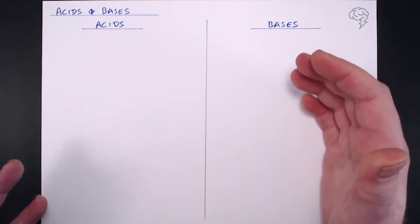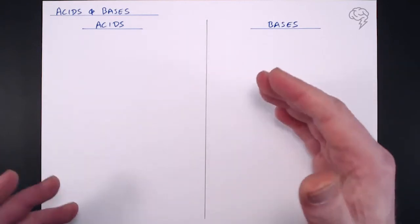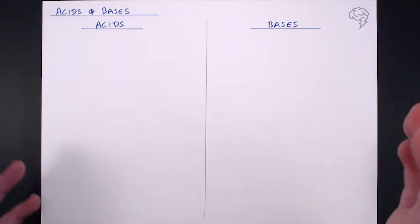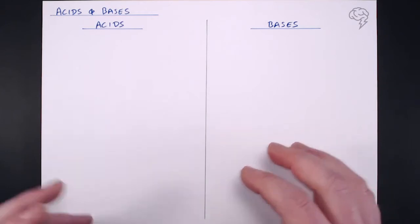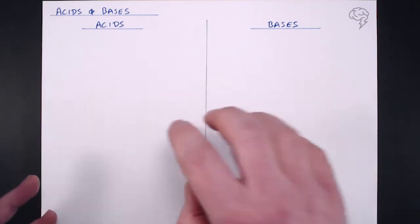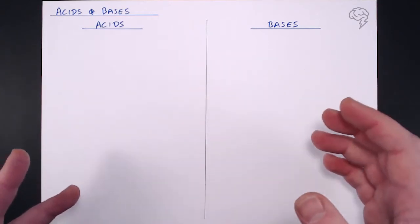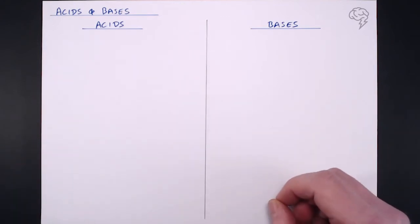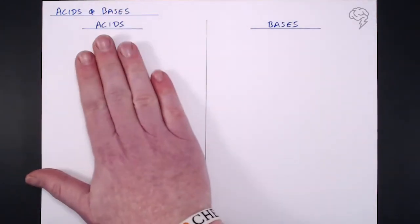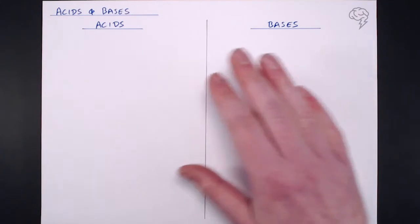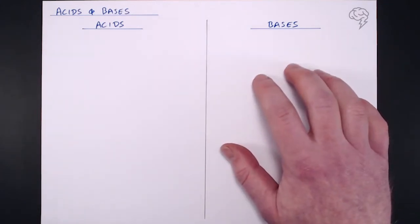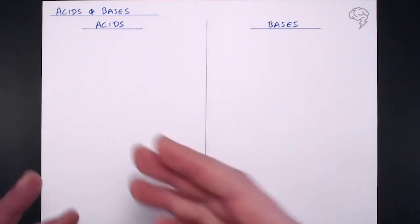This is the introductory tutorial to acids and bases before we start getting into all the calculations associated with them. Basically what I'm going to be doing here is detailing what acids and bases are and the different kinds that you can get. I've just set up the page here, with acids on the left hand side and bases on the right hand side. We'll deal with acids first.